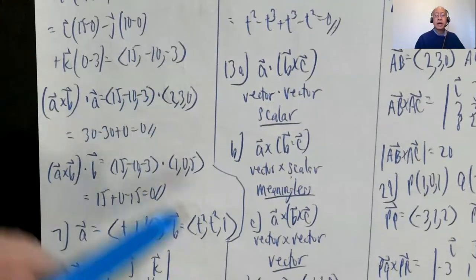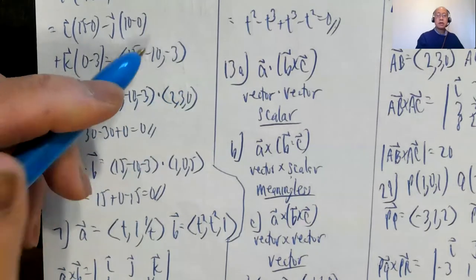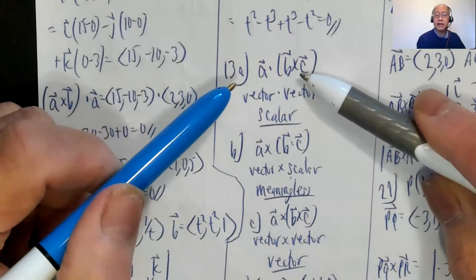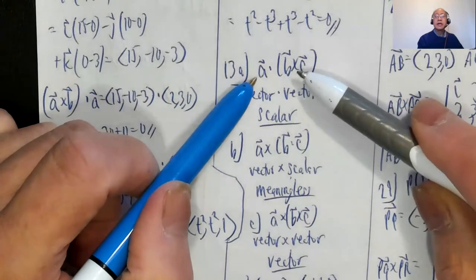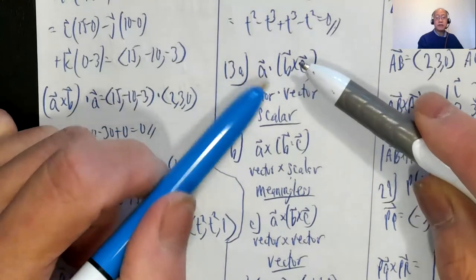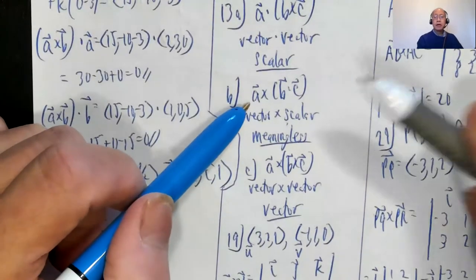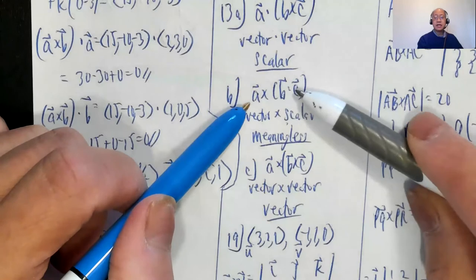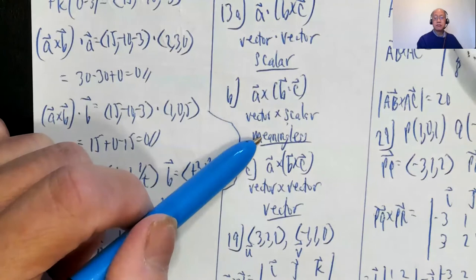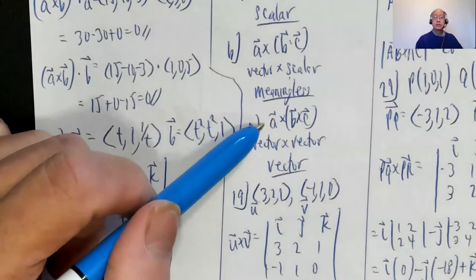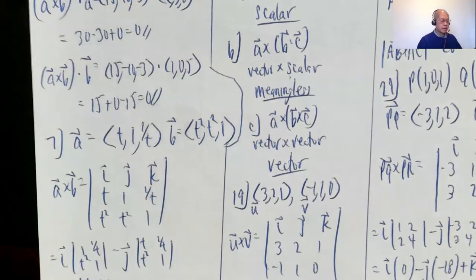Problem 13 asks whether expressions are a vector, scalar, or meaningless. A·(B cross C): B cross C is a vector, so vector dot vector gives a scalar. A cross (B·C): B·C is a scalar, so vector cross scalar has no meaning — that's meaningless. A cross (B cross C): B cross C is a vector, so vector cross vector is also a vector.